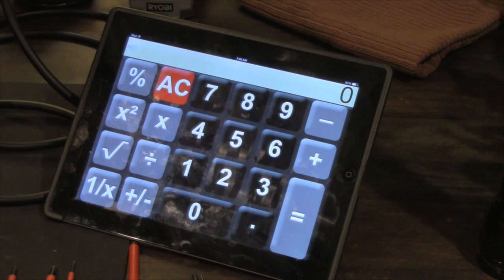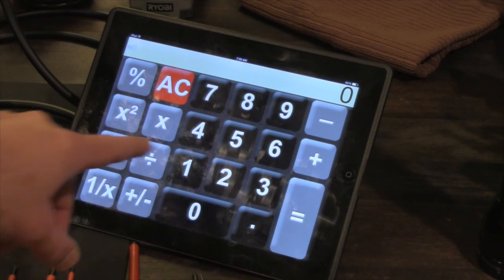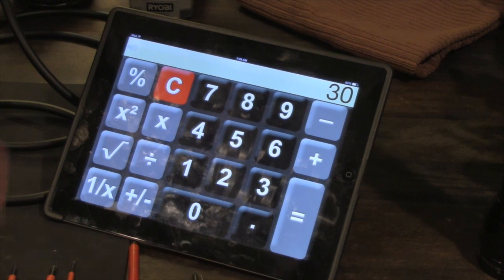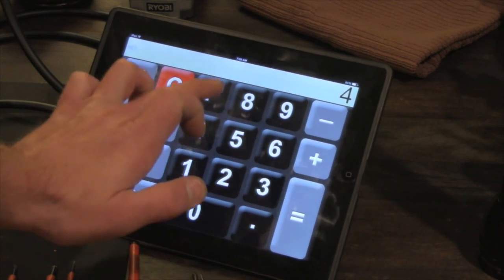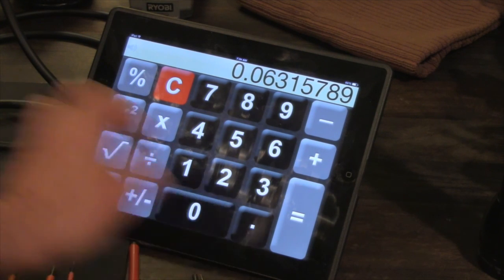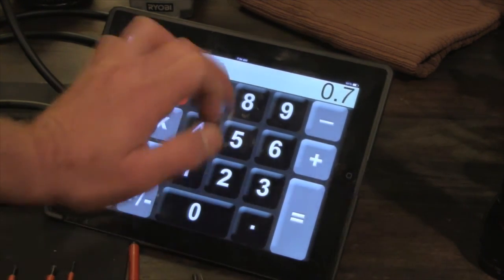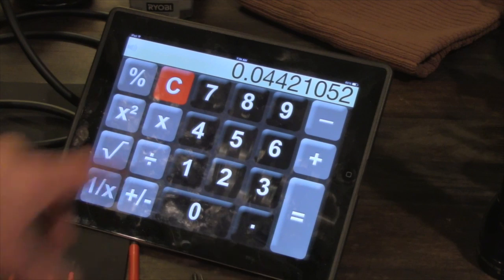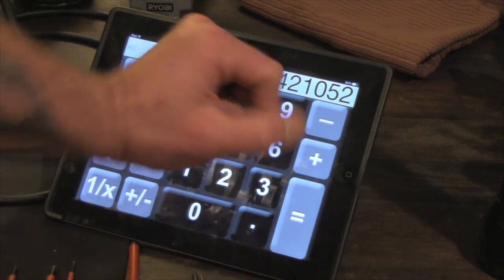Now you're going to need a calculator. I have the iPad set up here with a calculator on it. To figure out what your bias should be, you're going to need a little bit of a formula. We're going to take the 30 watts that the tubes are rated in, divide it by the 475 plate voltage, and then times that by 70% dissipation, times 0.7. That's going to give us our target. So our bias should be set at 44.